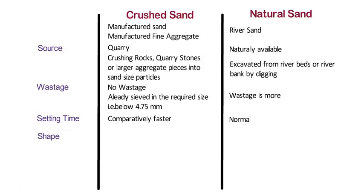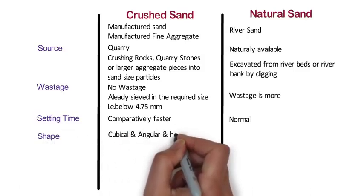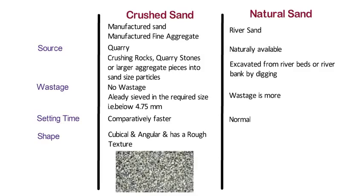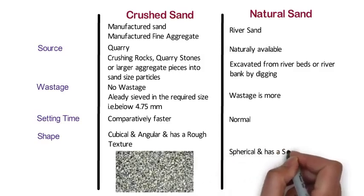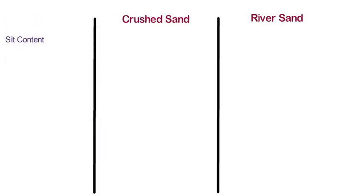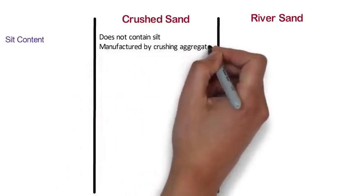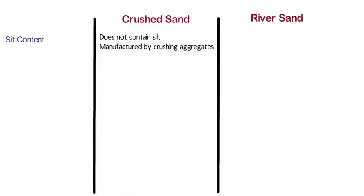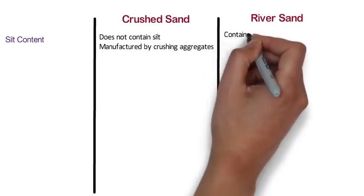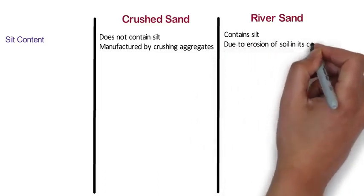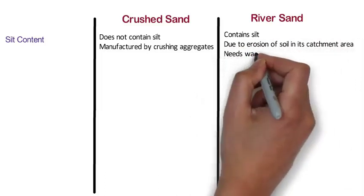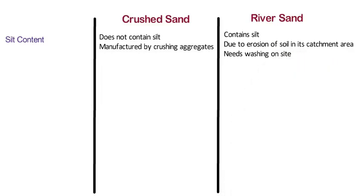Shape: The shape of crushed sand is cubical and angular and has a rough texture, hence it is better for concrete. Whereas the shape of natural sand is spherical and has a smooth surface. Silt Content: Crushed sand does not contain silt as it is manufactured by crushing aggregates; however, if screening is not proper, it may sometimes contain some dust. Whereas natural sand contains silt as river water carries it due to erosion of soil in its catchment area, hence it needs washing on site.